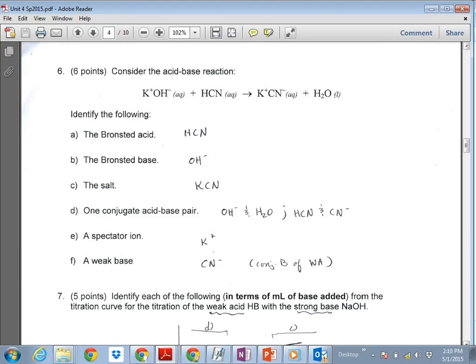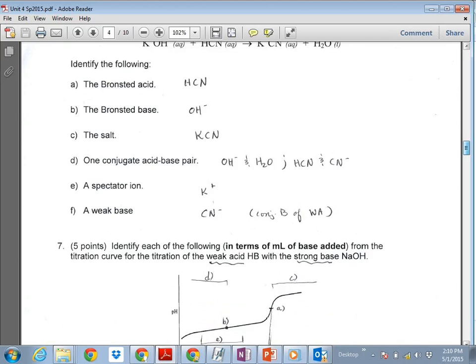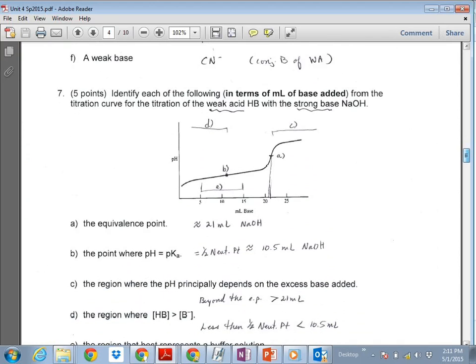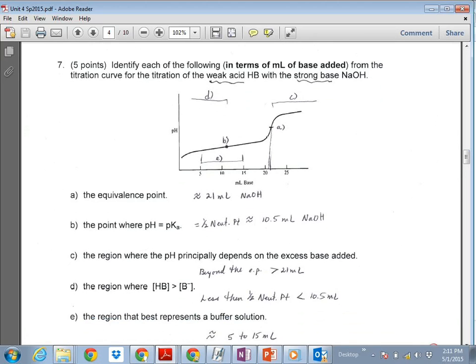So down here for question number seven, I gave you a curve, a titration curve, between a weak acid and a strong base, kind of like you guys did in lab, and asked you a few questions. The equivalence point is, I've marked there A on the graph, so actually it's give the volume at which the equivalence point occurs. And so I put about 21 milliliters. The point where pH is equal to pKa, that's the half neutralization point. So if it's 21 mils, then we're looking at 10.5 milliliters as the volume at which pH is equal to pKa.